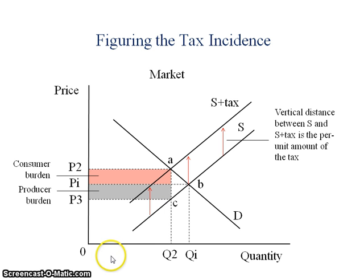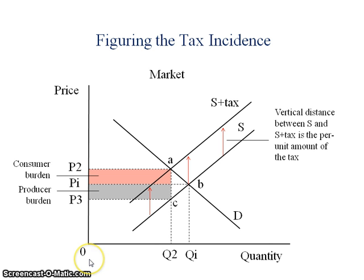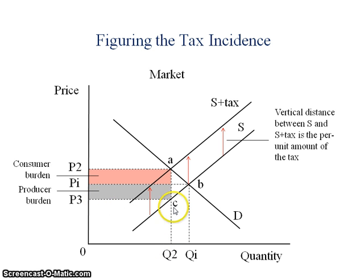The original total revenue collected by the firm before the imposition of the tax was the rectangular area zero, Q initial, B, and P initial. After the imposition of the tax, the new revenue that the firm gets to keep is zero, Q2, C, and P3 — because sales have dropped and P3 is the price the producer keeps. This revenue box is noticeably smaller, so we've seen that the result of really any tax is going to be a fall in total revenue for the firm.